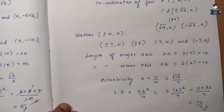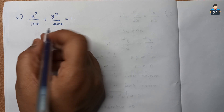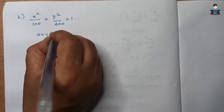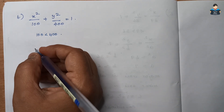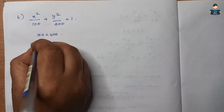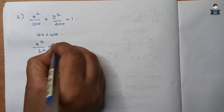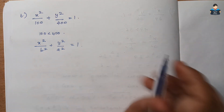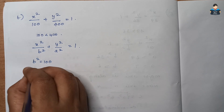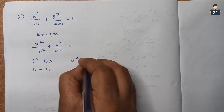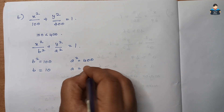That is the answer for Question 5. Next is Question 6. Here 100 is less than 400, so the major axis is along the y-axis. We use x²/b² + y²/a² = 1. So b² = 100, b = 10, a² = 400, a = 20.